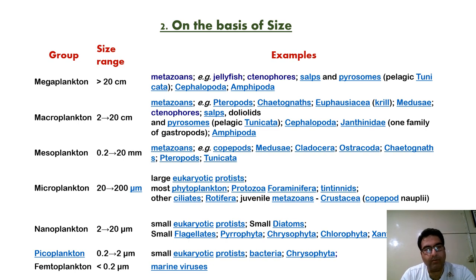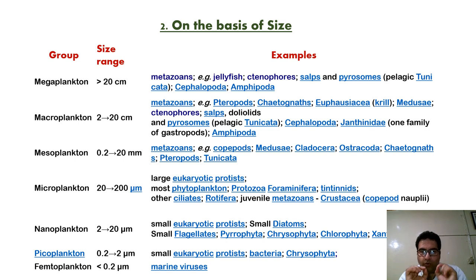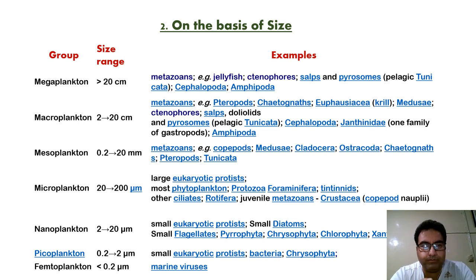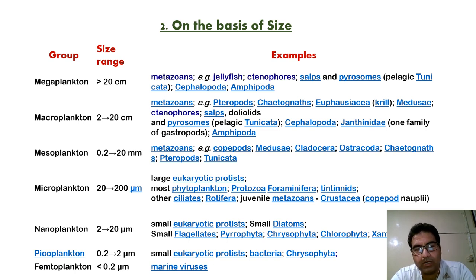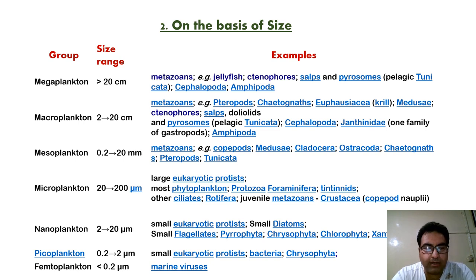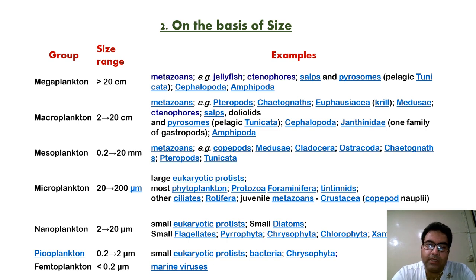To summarize: megaplankton — more than 20 centimeters; macroplankton — 2 to 20 centimeters; mesoplankton — 0.2 to 20 mm; microplankton — 20 to 200 micrometers; nanoplankton — 2 to 20 micrometers; picoplankton — 0.2 to 2 micrometers; and femtoplankton — less than 0.2 micrometers.